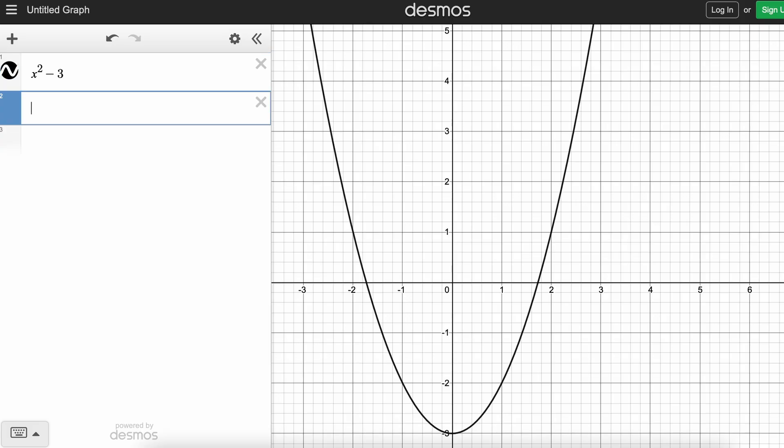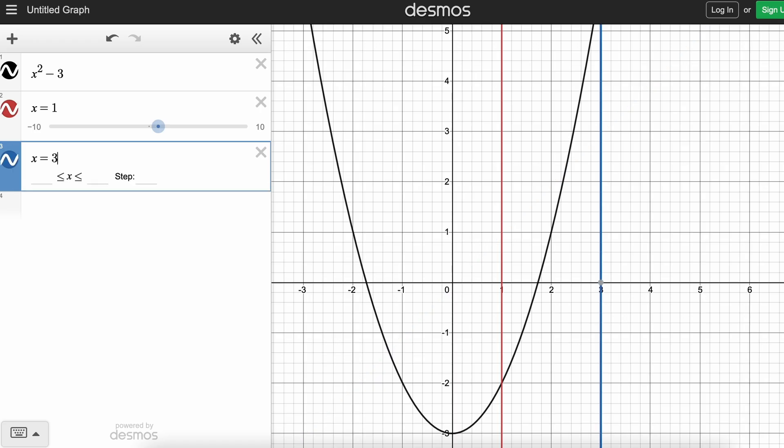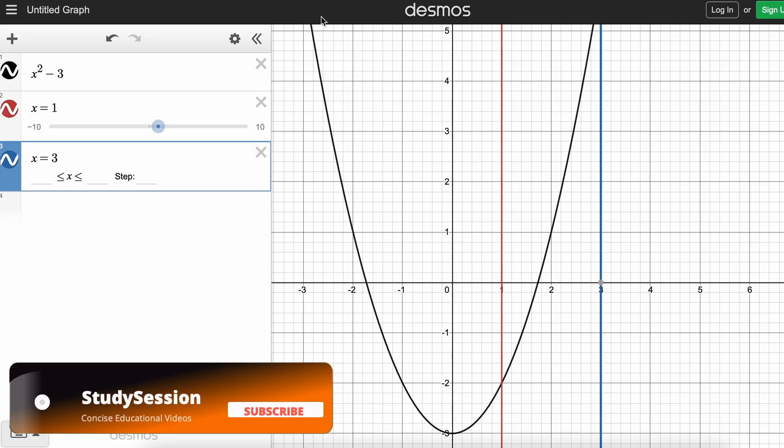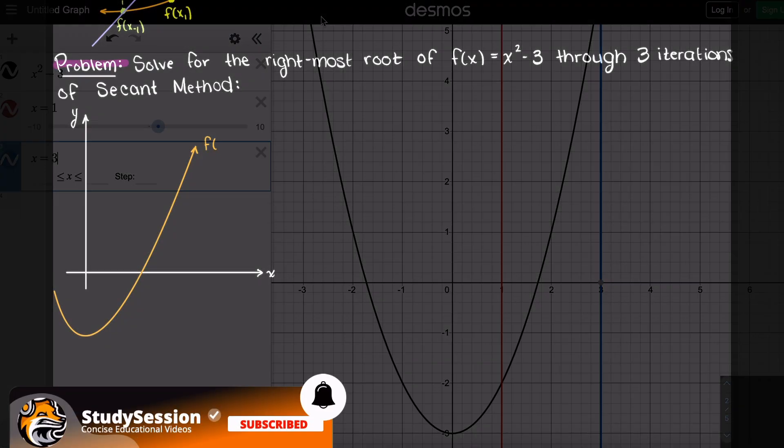When we graph our function it looks like this. I'm just going to arbitrarily select x values of 1 and 3, where 3 is our x naught value and 1 is our previous x iteration. Again, with the secant method these are just two initial x guesses to get us started. So let's just quickly draw out our function that we looked at in Desmos here so we can review the secant method briefly.